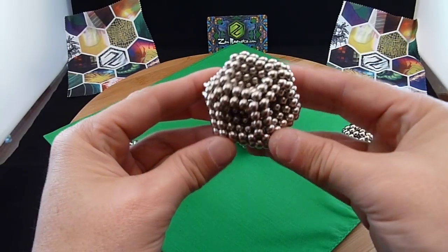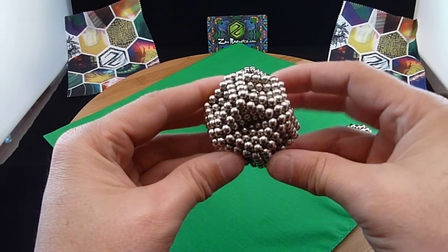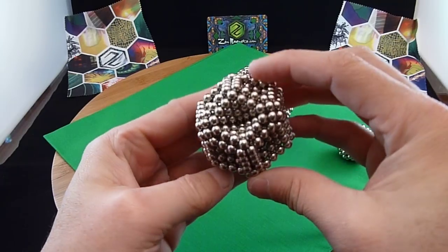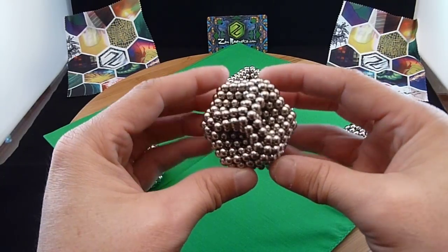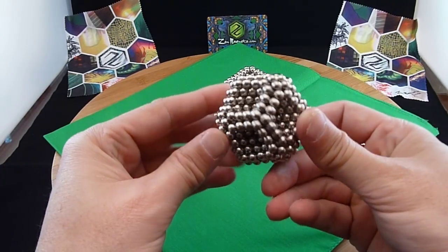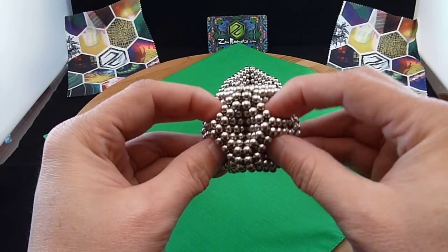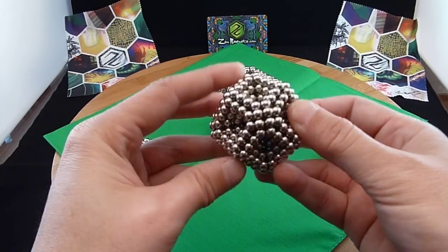And once again, a very unique shape. Each side kind of looks like a rhombus. I'm sure this has some sort of technical polyhedron name, but I haven't looked it up yet.